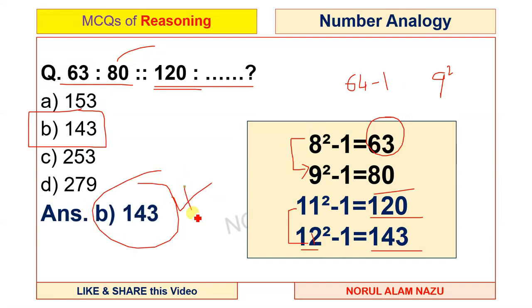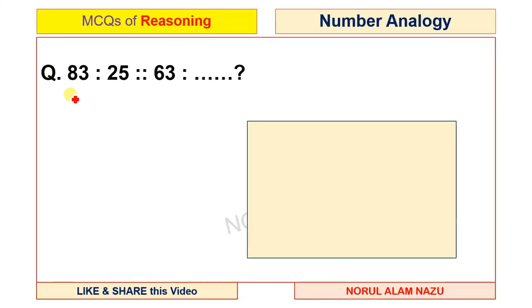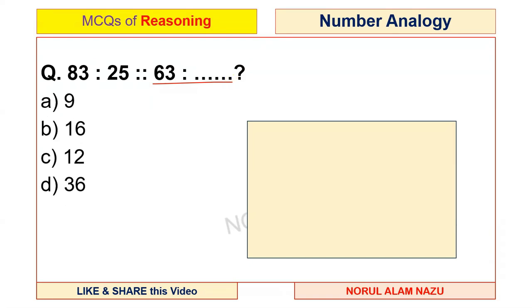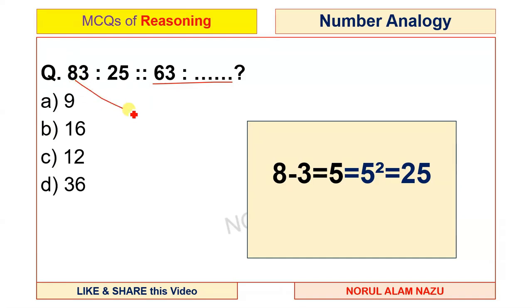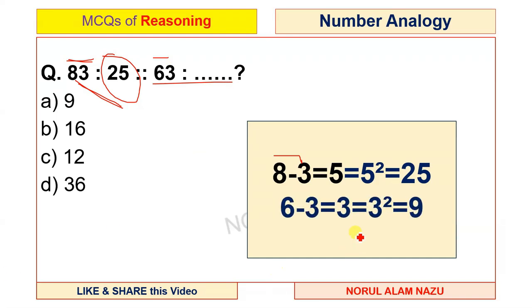Next: 83 is to 25, 63 is to what? Options: 9, 16, 12, 36. 8 minus 3 equals 5, and 5 squared equals 25. Then 6 minus 3 equals 3, and 3 squared equals 9. So option A, the answer is 9.